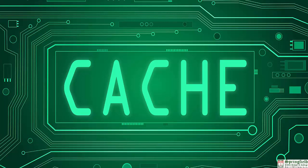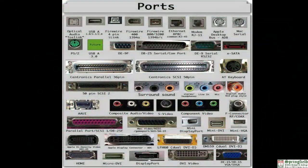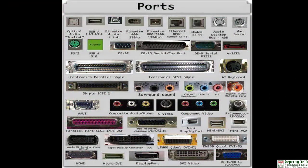Cache memory is a small amount of extremely fast memory located inside the microprocessor or on the motherboard. It is faster and more expensive than RAM, and it stores information most frequently used by the computer. A port is an interface for connecting various devices to the system unit; ports are located on the motherboard and are usually seen at the back of the system unit.